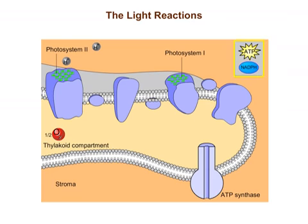Next, ATP and NADPH are used in the sugar-making process of the Calvin cycle.